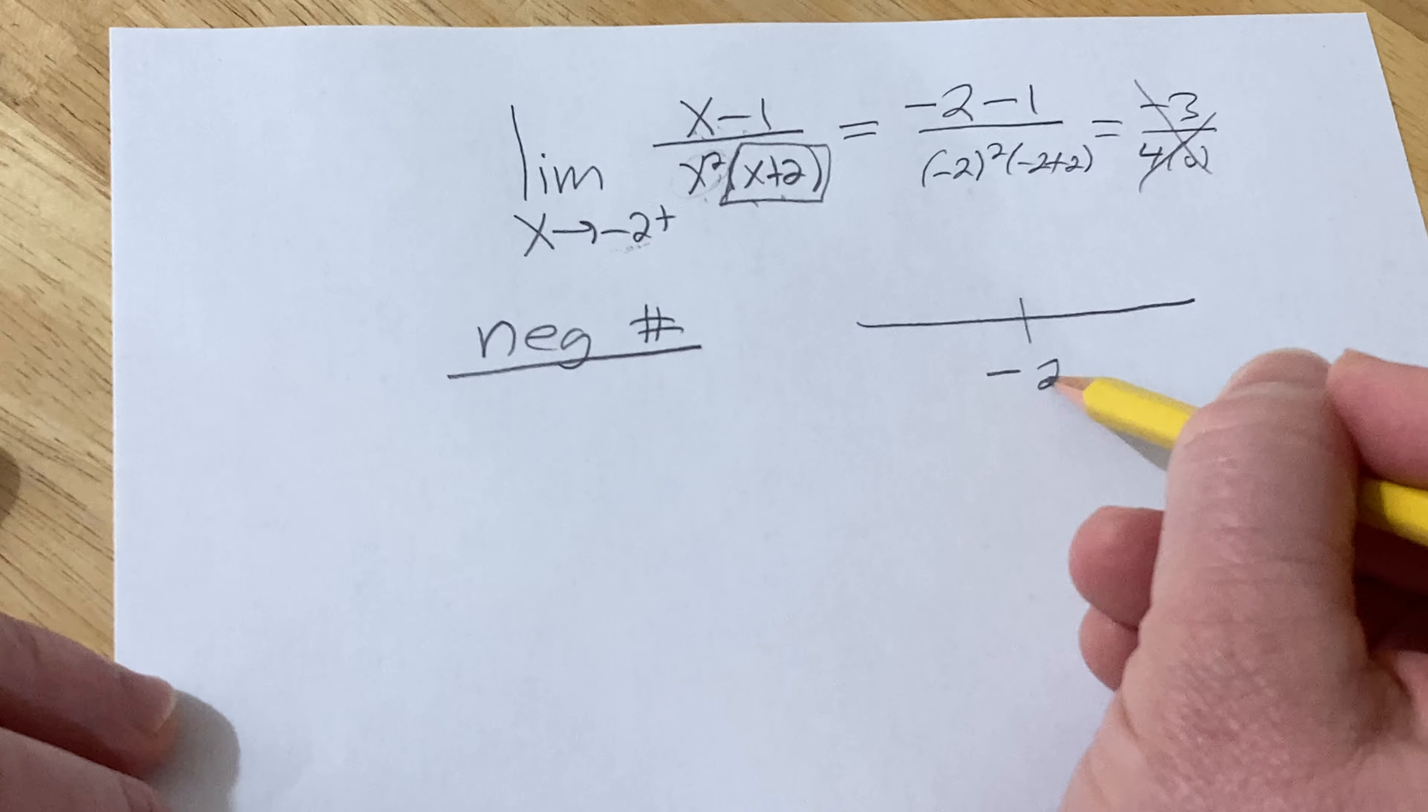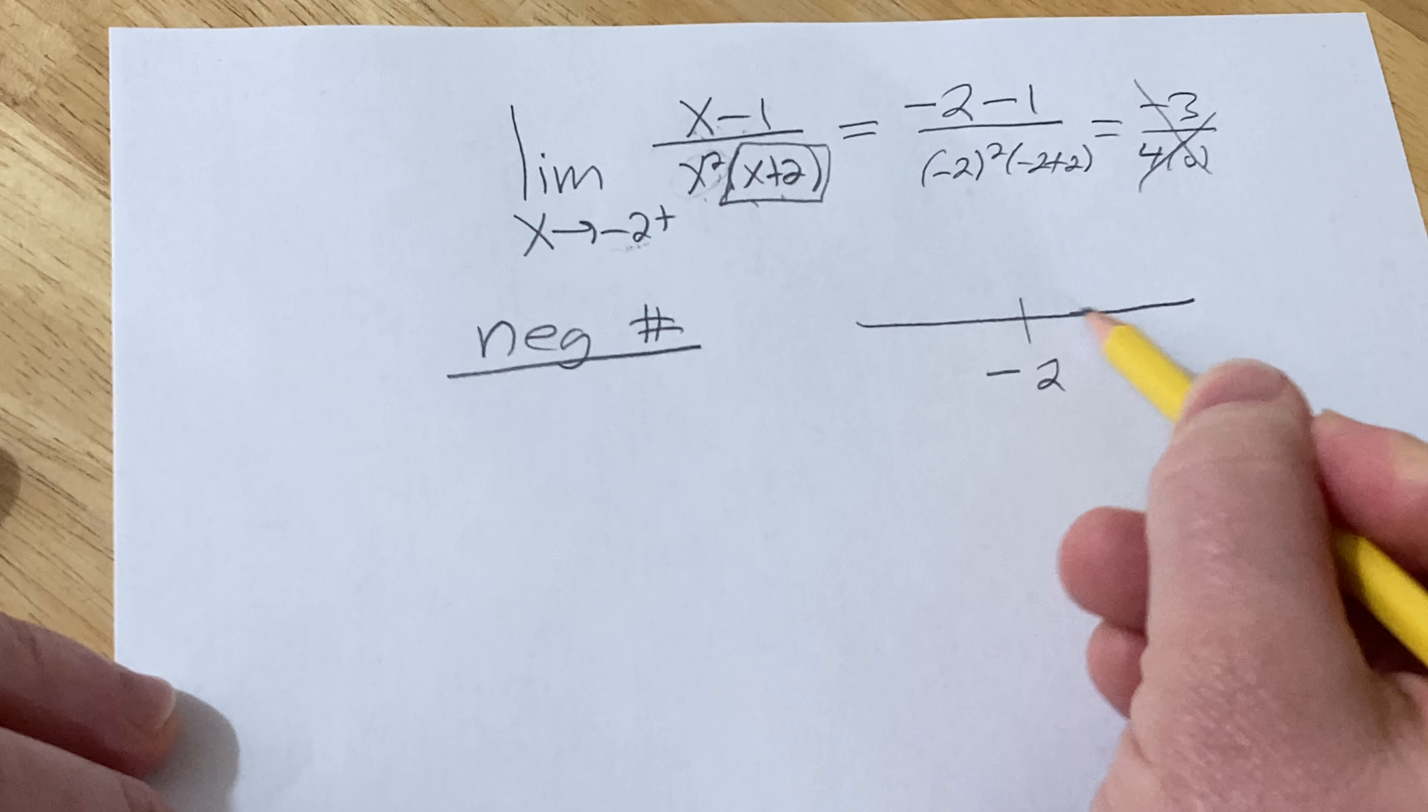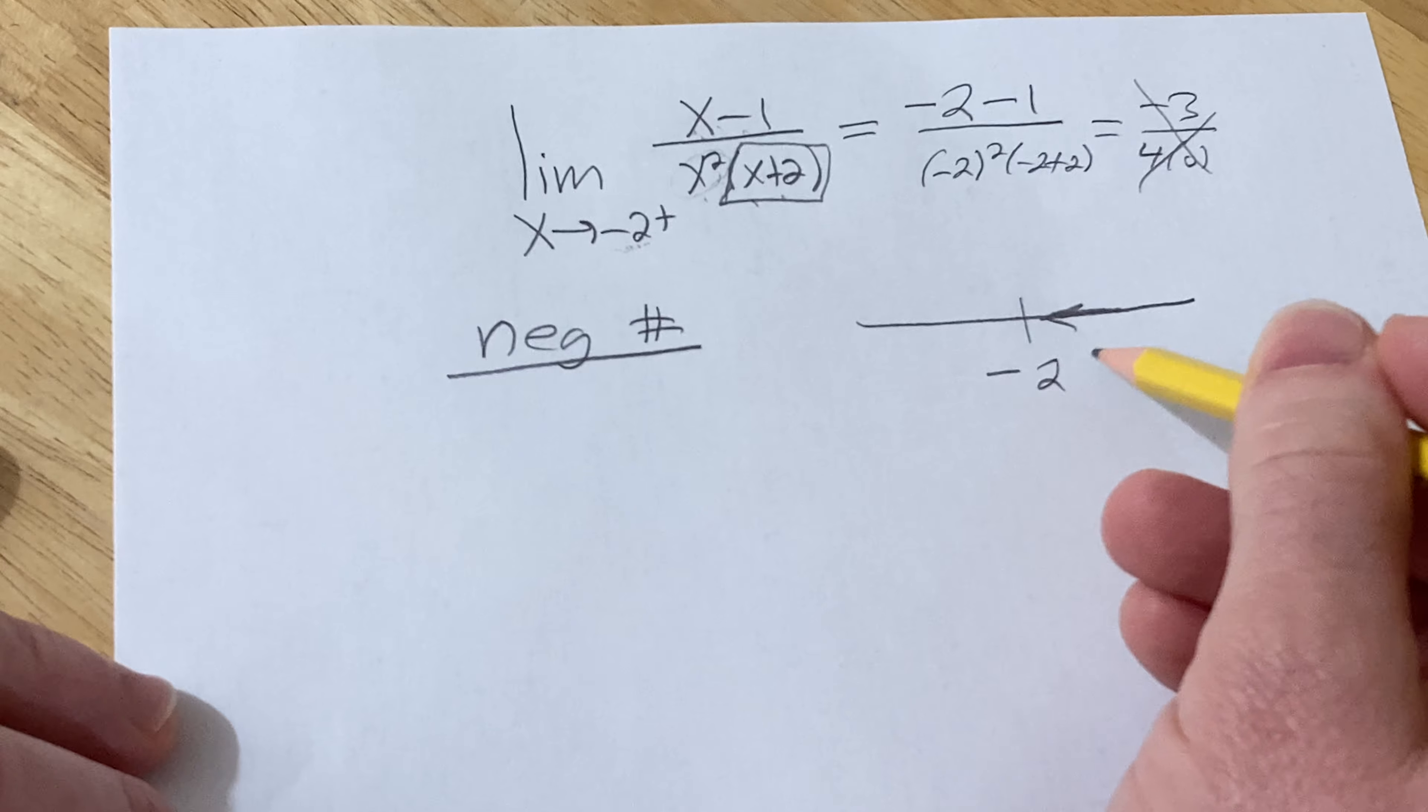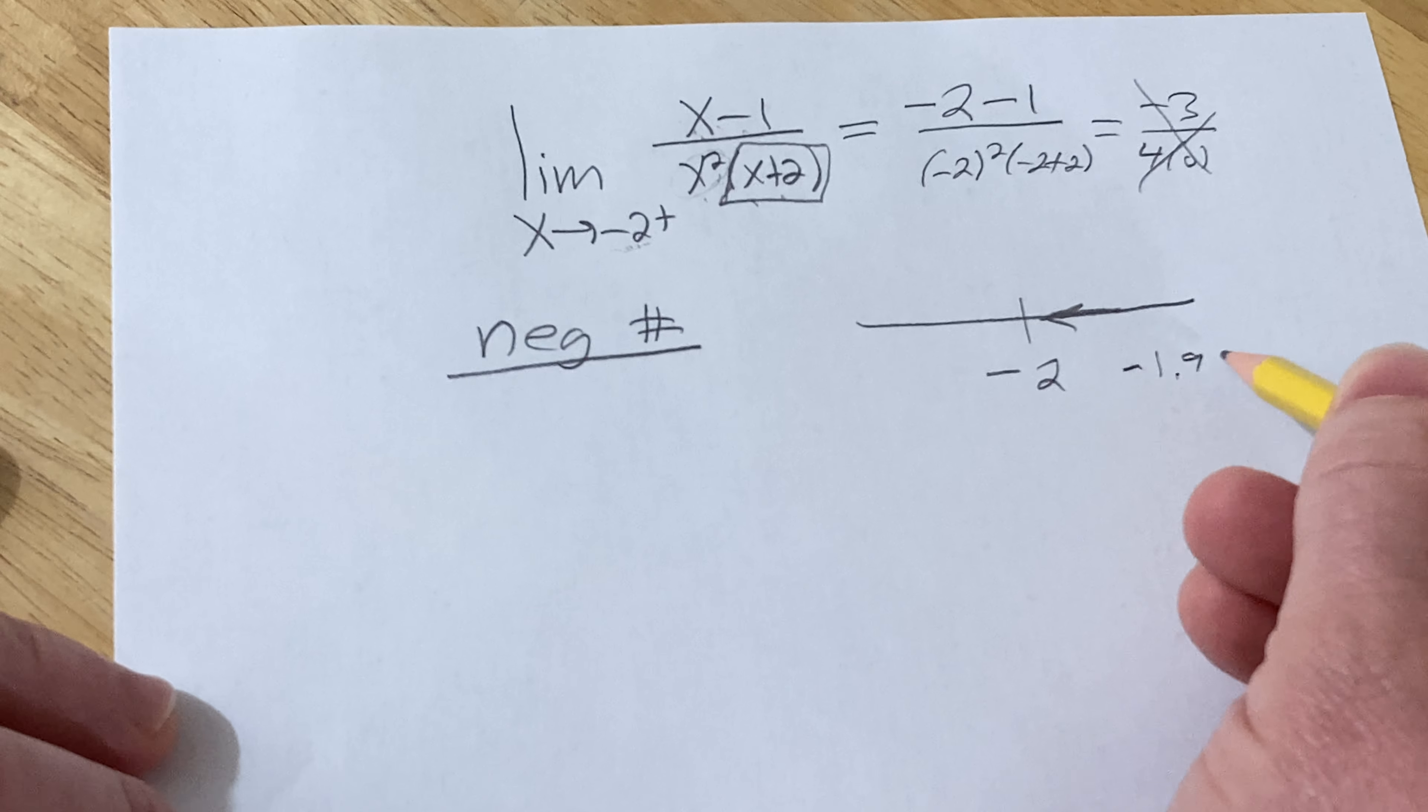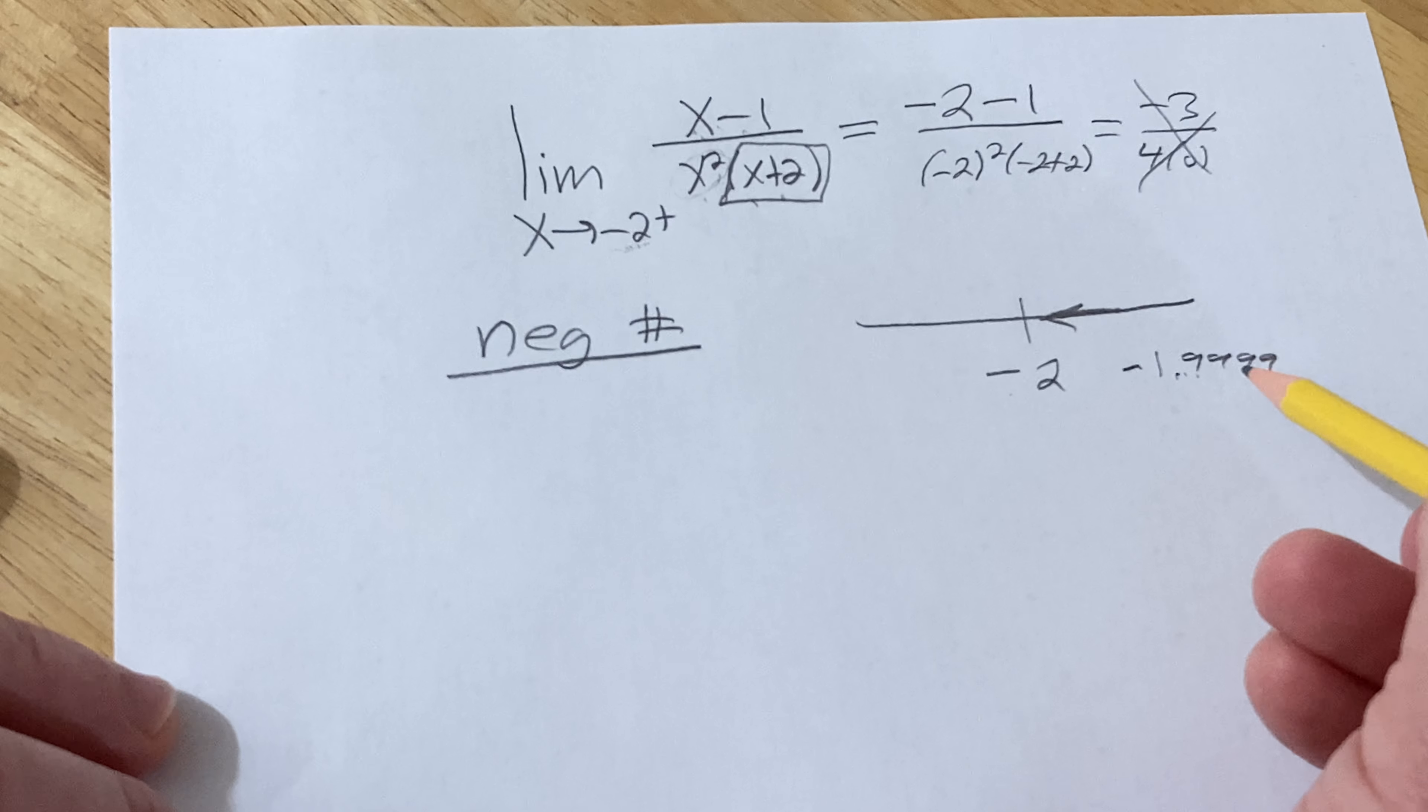Here's negative 2. We're approaching from the right. So what's a number that's bigger than negative 2 but really close to negative 2? Maybe something like negative 1.99999, just for an approximation. It gets infinitely close. We can't really stop on a number. It's not correct.